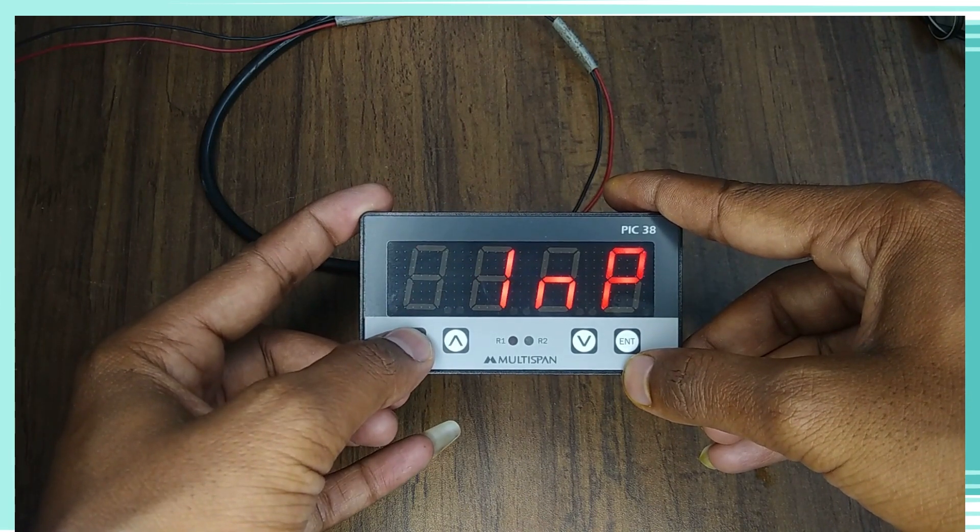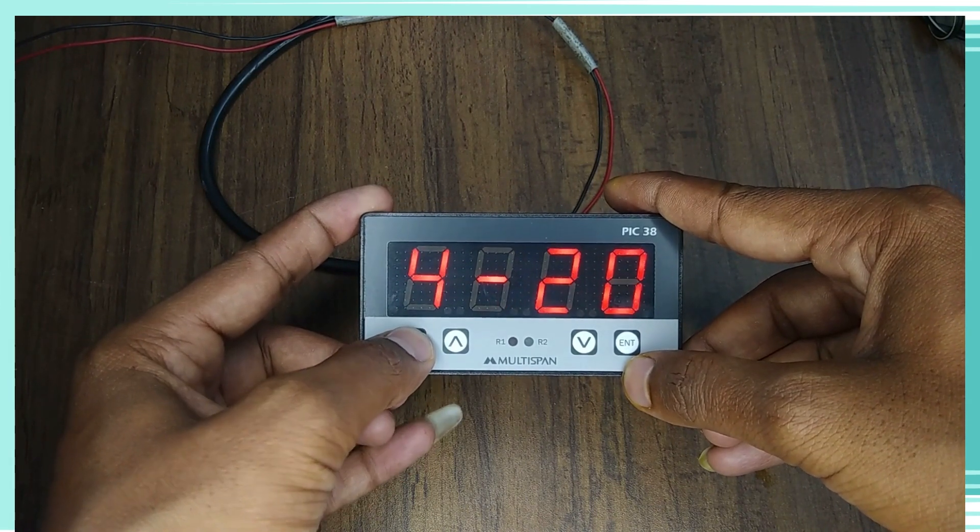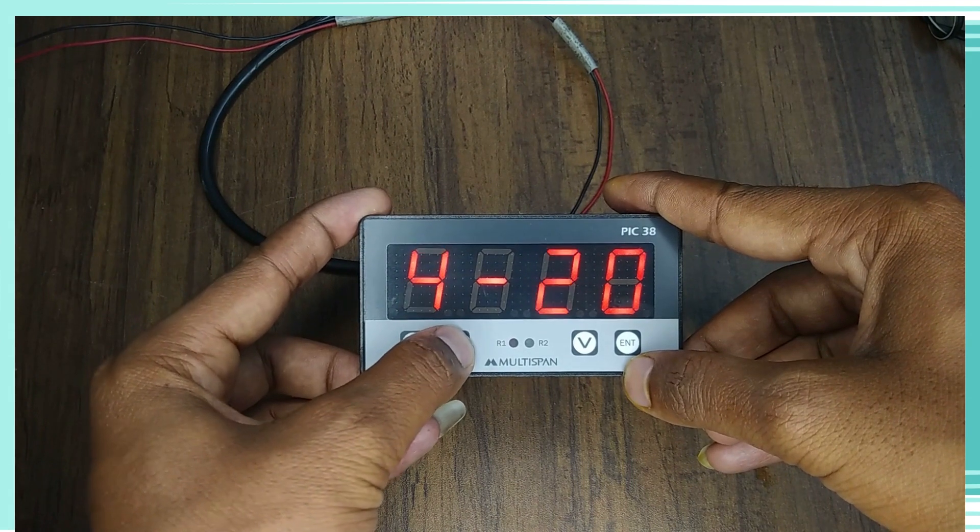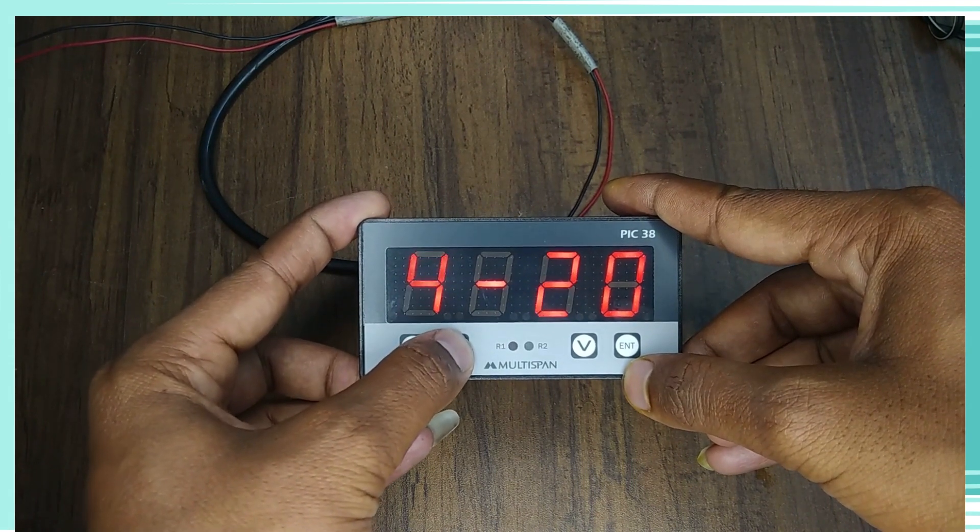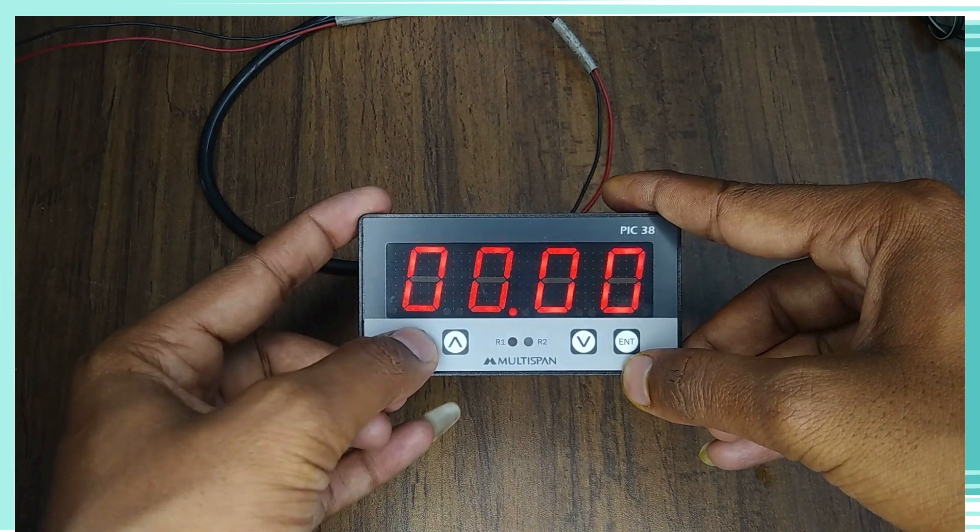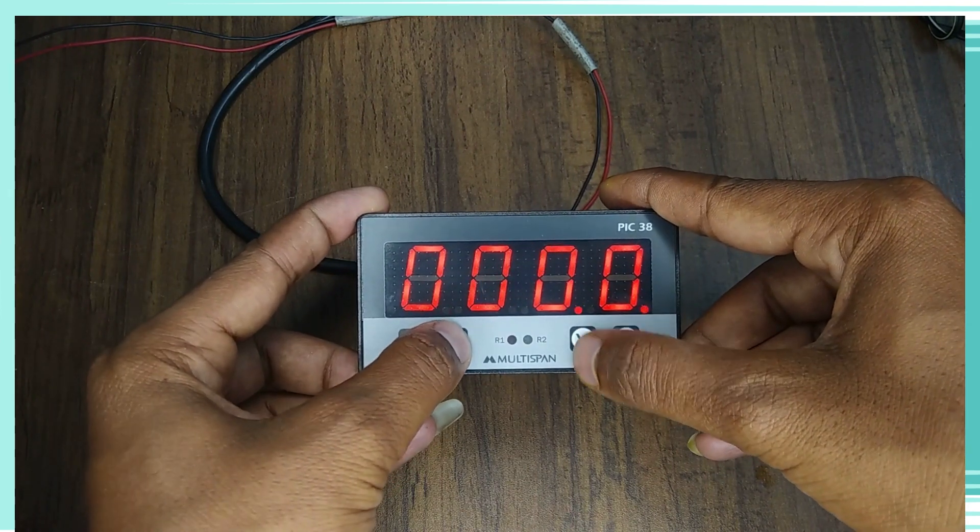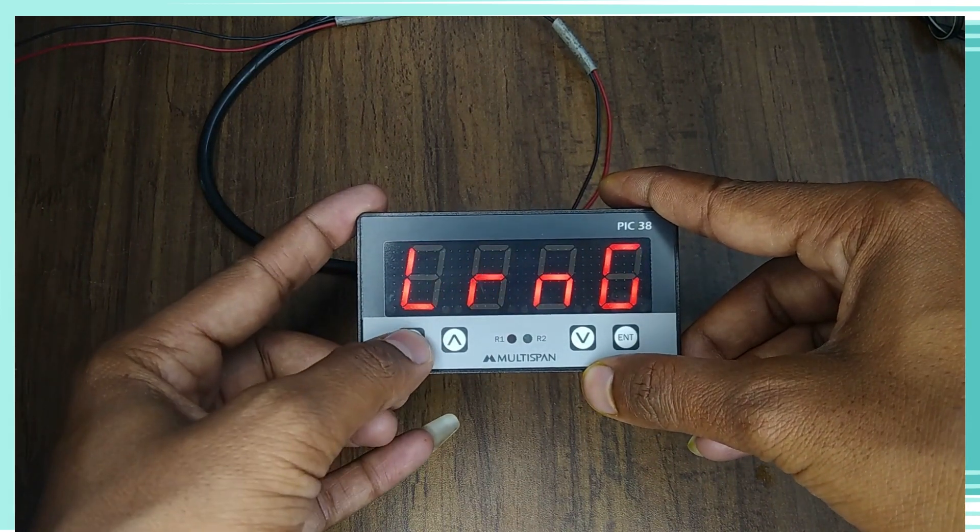After that in the input, we can set up to 0 to 20, 4 to 20 milliampere DC and 0 to 10 volt DC. Next set press key is decimal point. In that, you can change the decimal point.